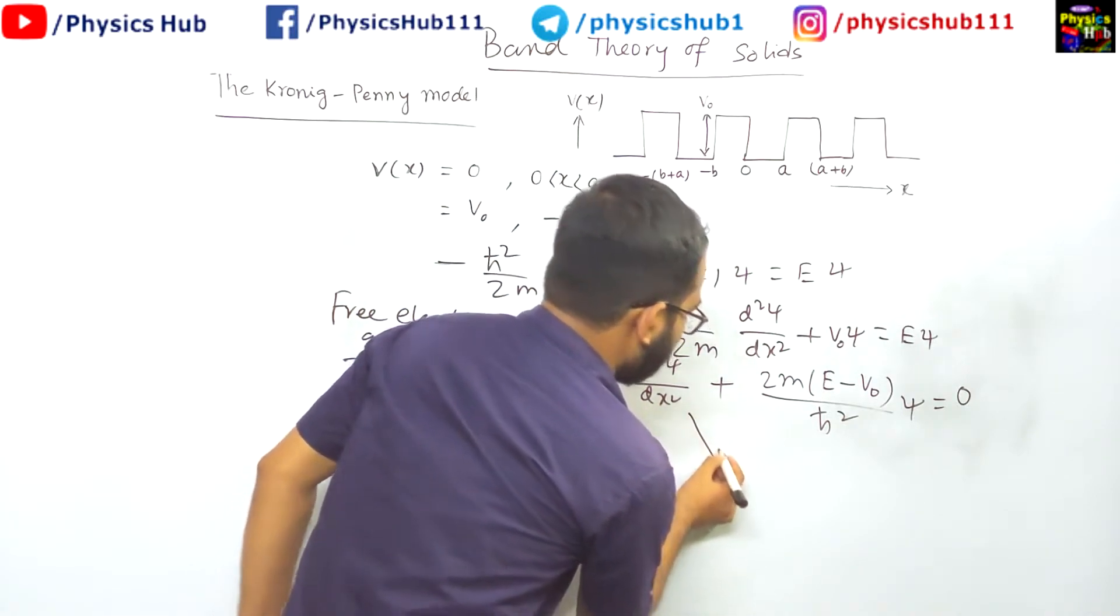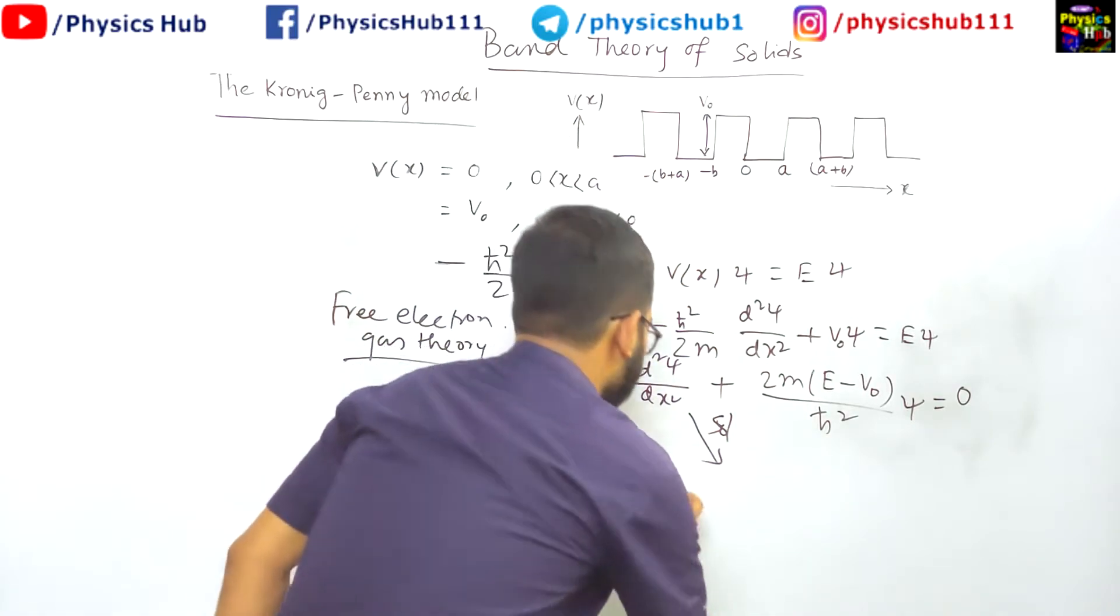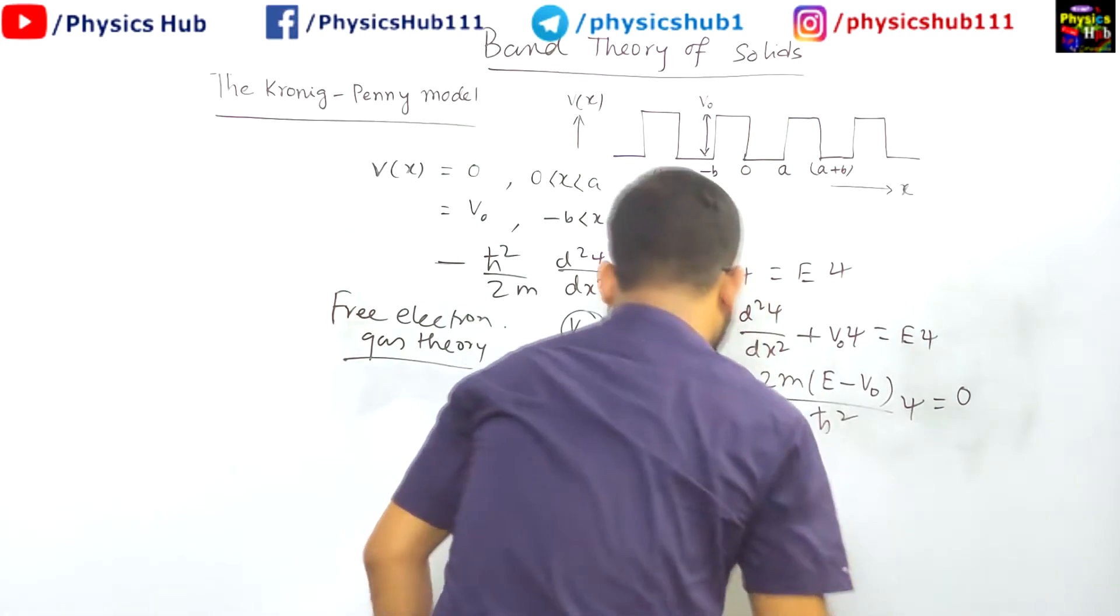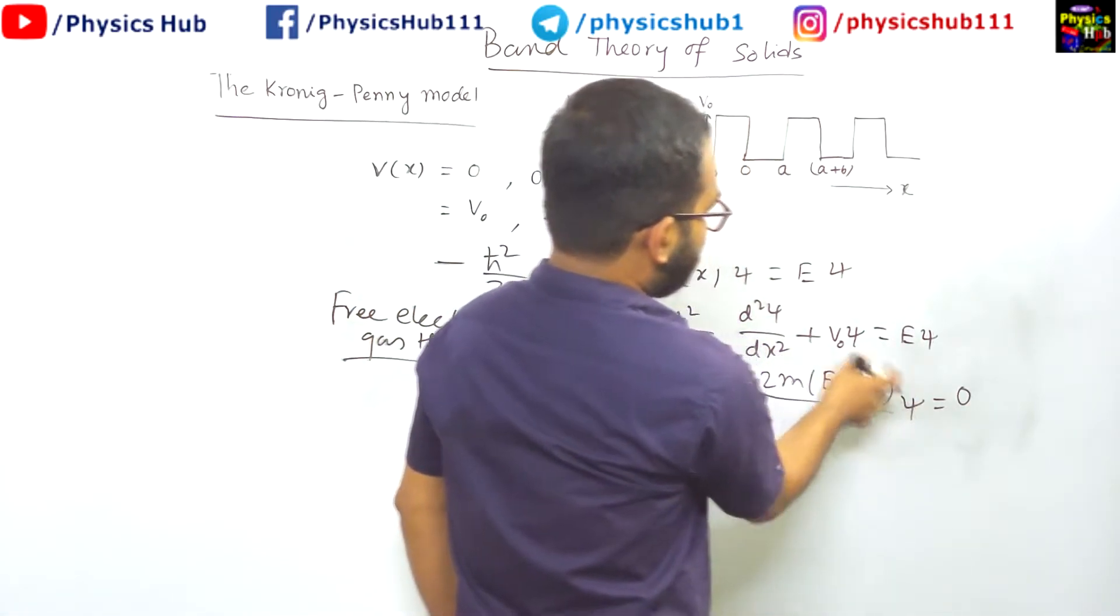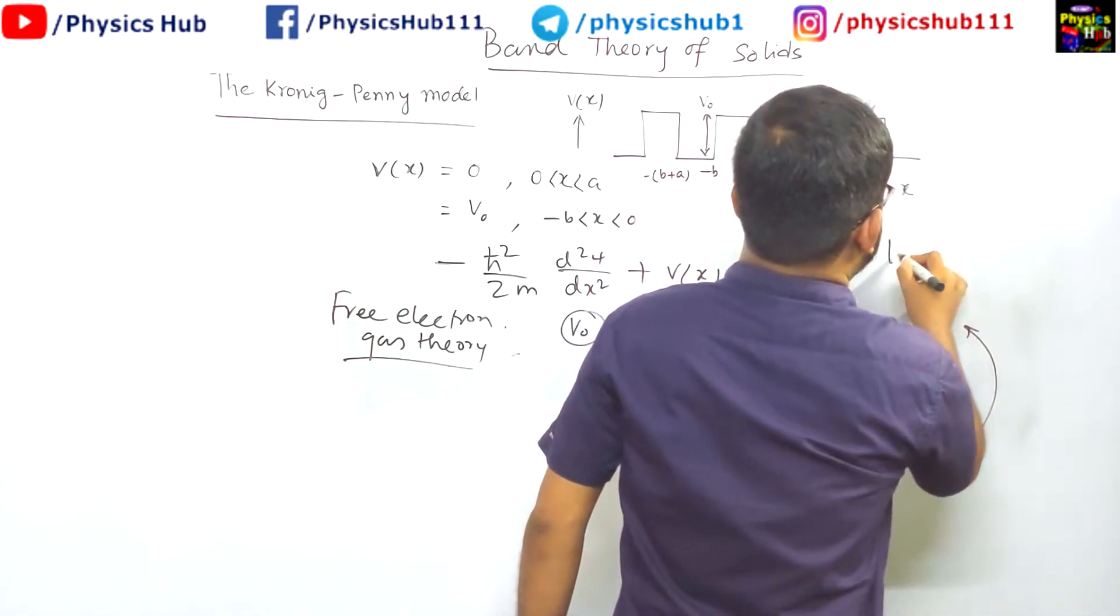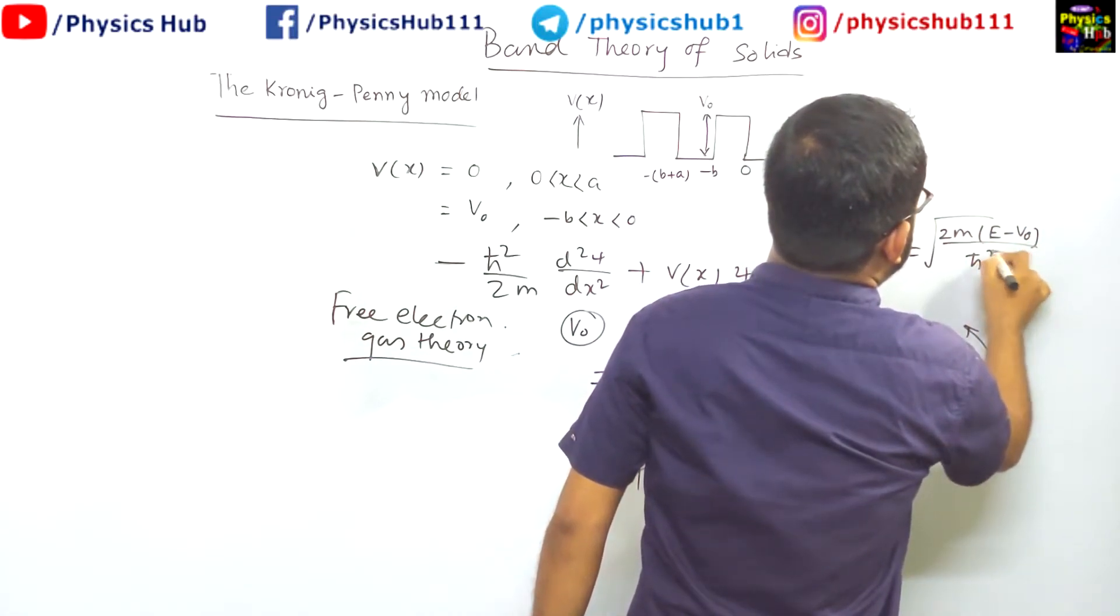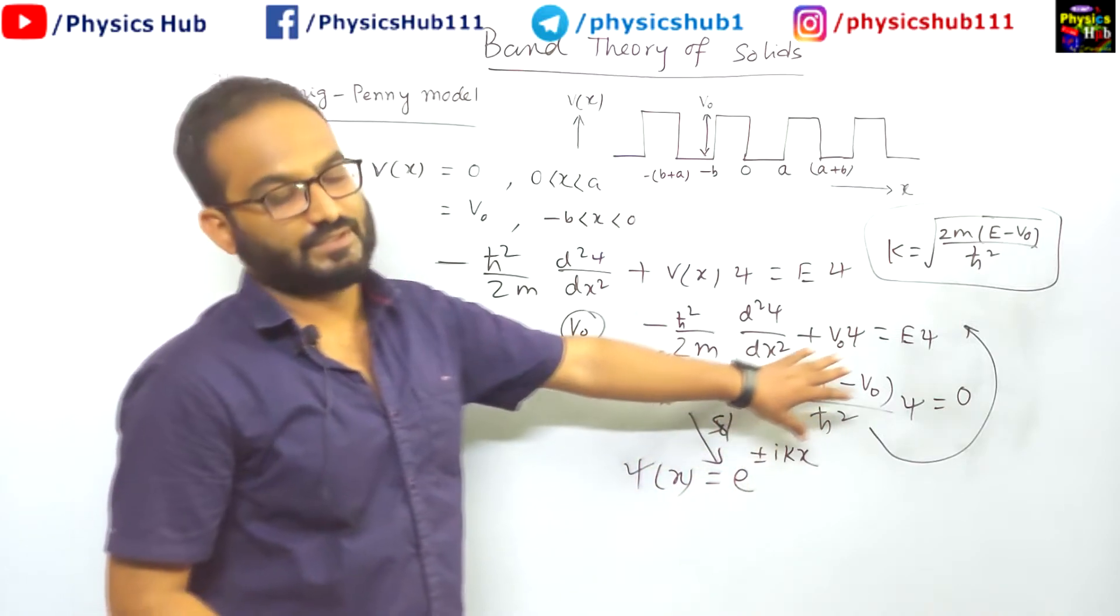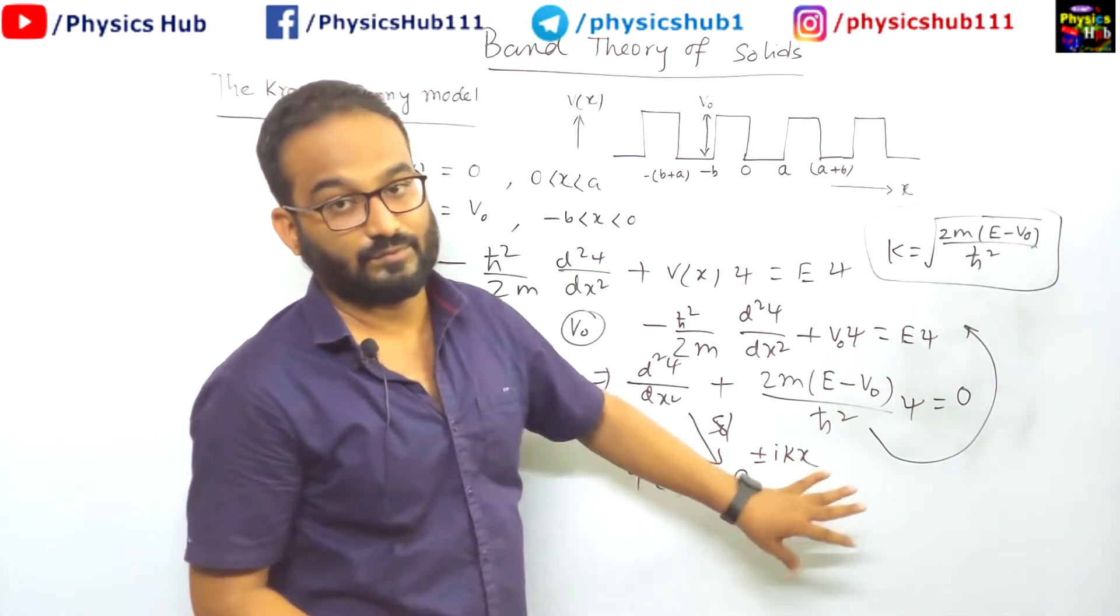And the solution to this Schrödinger equation is given by some plane wave solution. The solution of this Schrödinger equation is psi of x equals e to the power plus minus i kx. So this solution we have got. What is this k? k is nothing but square root of 2m times e minus v0 upon h bar square. This is the value of k. So this solution you get when you consider a constant potential or a 0 potential, this is a plane wave solution.